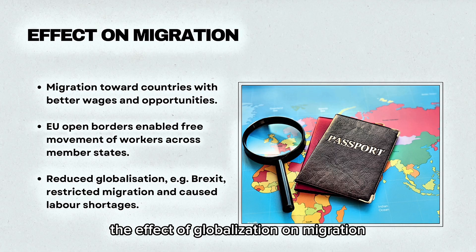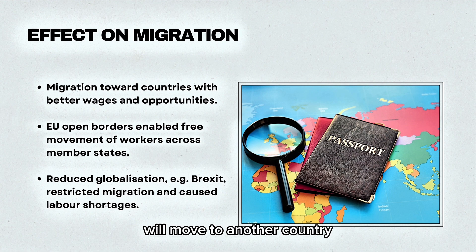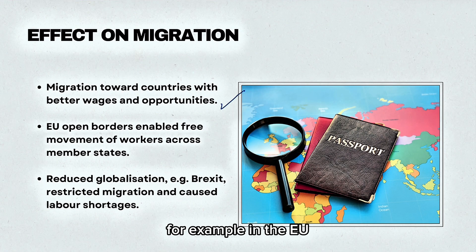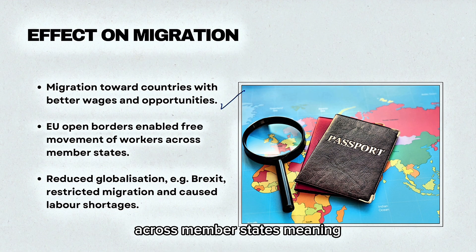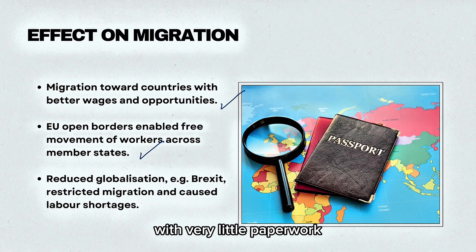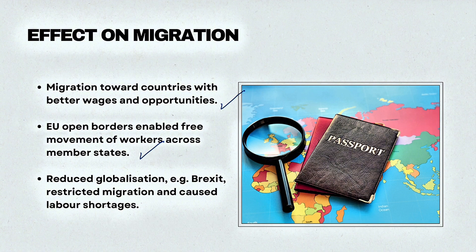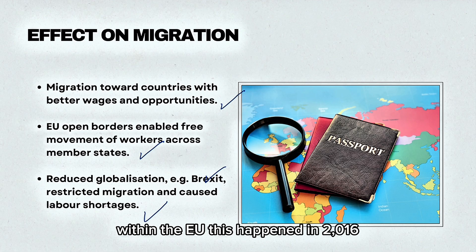The effect of globalization on migration is that people will move to another country when there are better wages and opportunities. For example, in the EU, open borders have enabled the free movement of workers across member states, meaning someone from France can move to Germany with very little paperwork. On the other hand, reduced globalization, such as Brexit, has restricted migration and caused labor shortages within the EU. This happened in 2016.